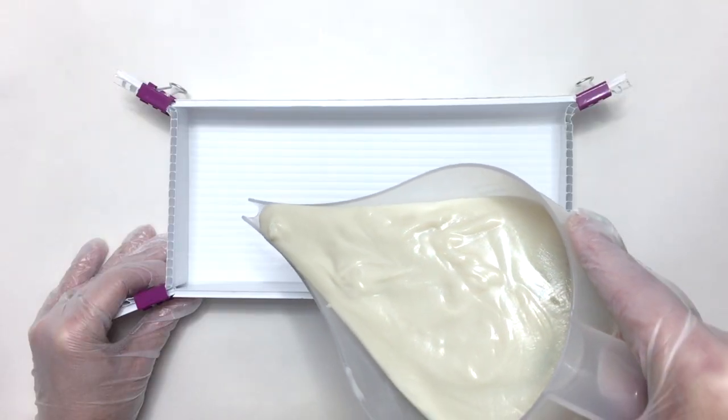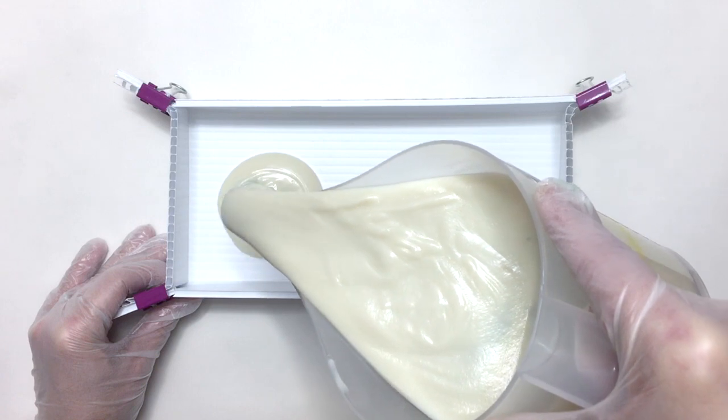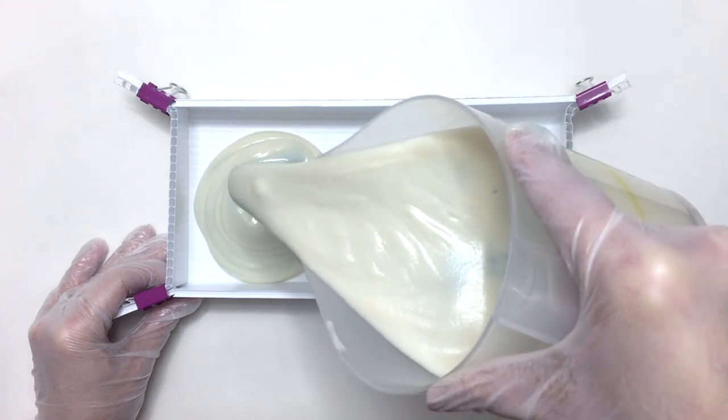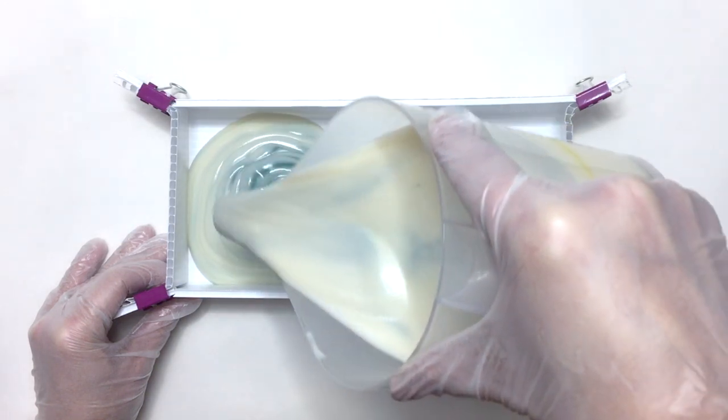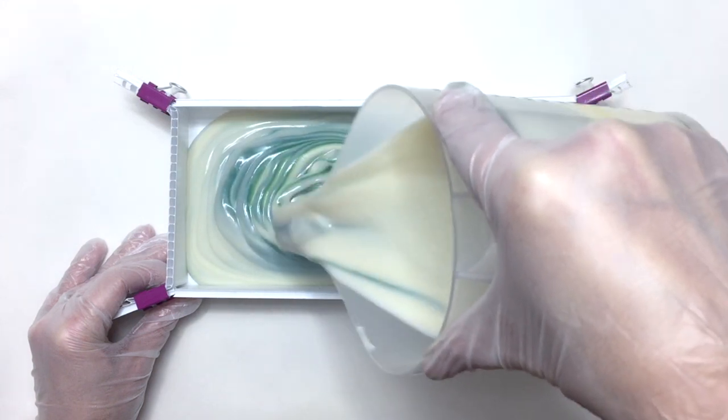Let's get this soap in the mold. This is another custom mold that I made from corrugated plastic. If you'd like to see the video on how I made another mold like this, I'll put the link in the description.